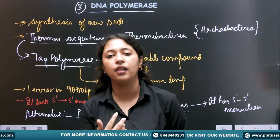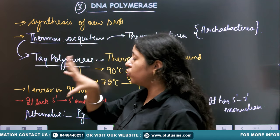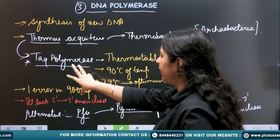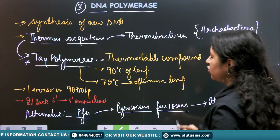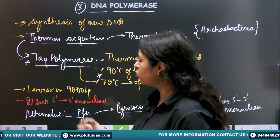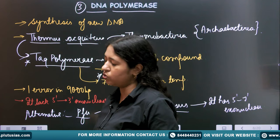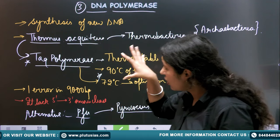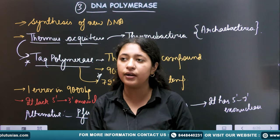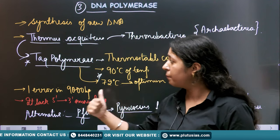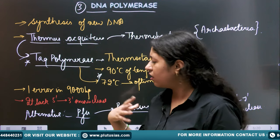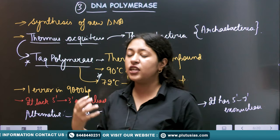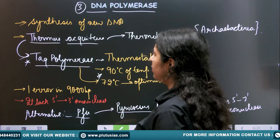Despite this limitation, Taq polymerase is most commonly used because it is readily available and cost-efficient. The rate of error is already very low, so most researchers do not require the 5' to 3' exonuclease activity. But for very specific experiments, PFU polymerase might be needed. In common use, Taq polymerase is preferred.